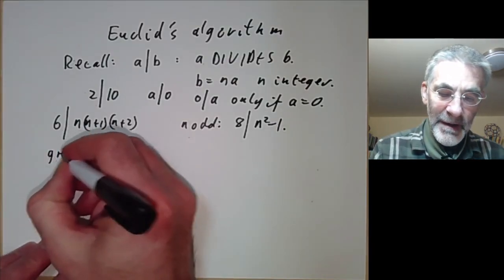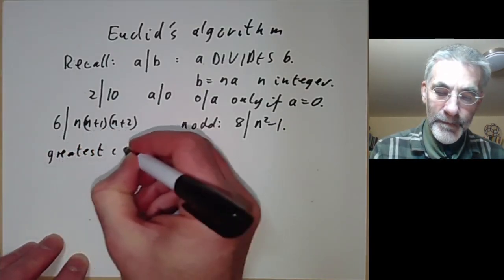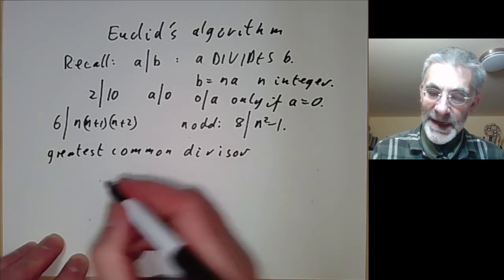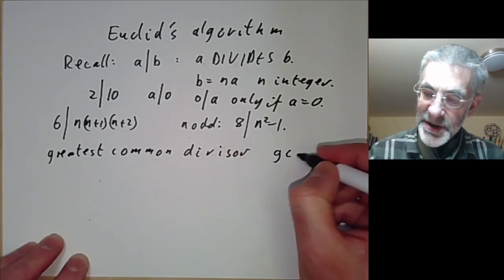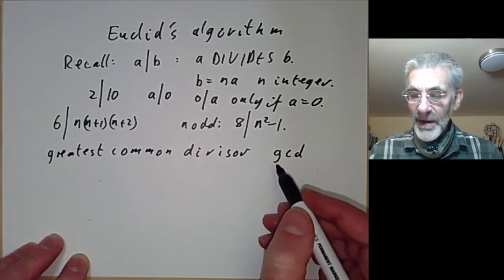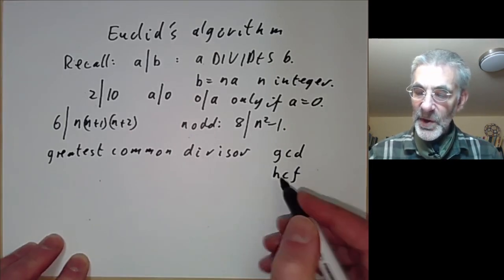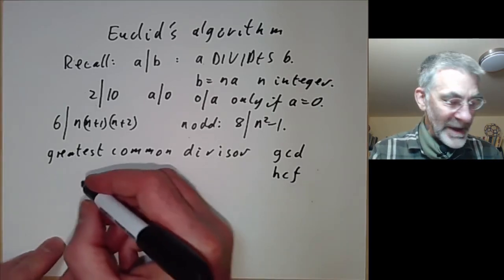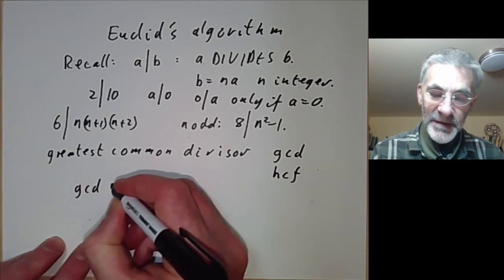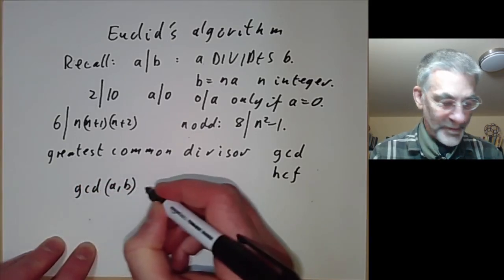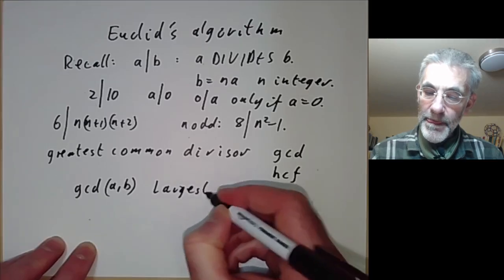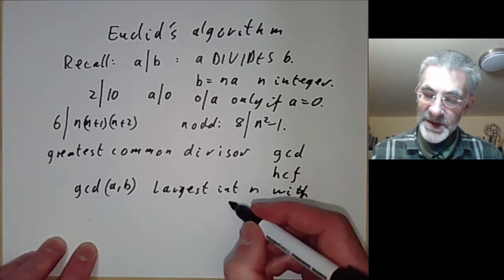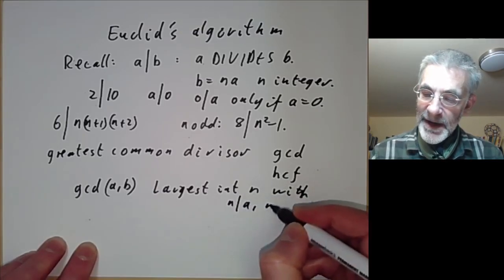The greatest common divisor takes rather a long time to write out, so it's usually abbreviated as GCD. An old name for this is highest common factor, so in some old books you'll occasionally see HCF. The greatest common divisor of two integers a and b is the largest integer n such that n divides both a and b.